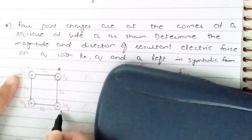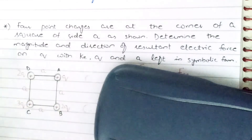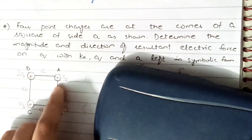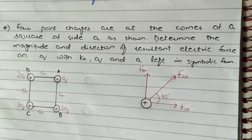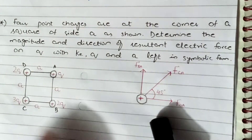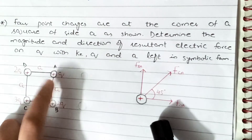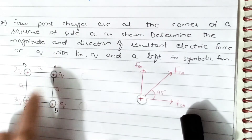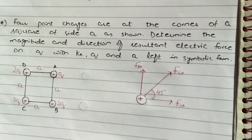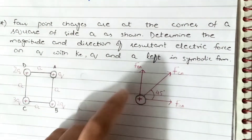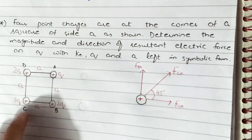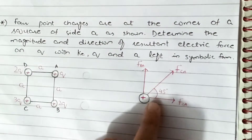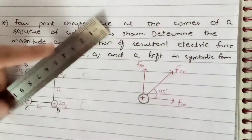For convenience, let's name the charges: the charge we're analyzing is A, and the others are B, C, and D. This diagram looks complex, but if I make a free body diagram of charge q (which is A), it becomes clearer. Charge D is positively charged, so it repels charge A — that's why force Fda points in that direction. Charge B is also positively charged and repels charge A, so Fba points in that direction.